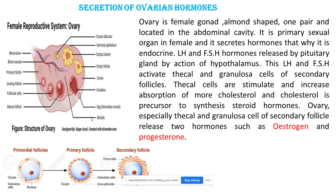LH and FSH activate the thecal cells and granulosa cells of the secondary follicle. Looking at this diagram, the primordial follicle is converted into a primary follicle, and the primary follicle is converted into a secondary follicle. The thecal cells and granulosa cells of the secondary follicle are responsible for secretion of hormones.